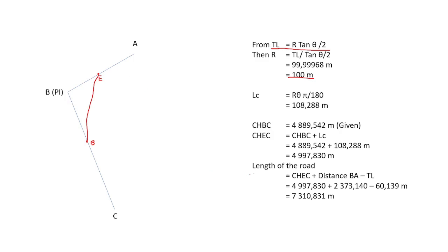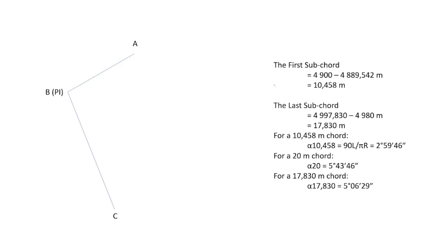To determine the total length of road, we take chainage EC plus the distance BA, minus the tangent length TL. That represents the full road section — the chainage through the curve plus the remaining straight section — giving us a total length of 7310 meters.